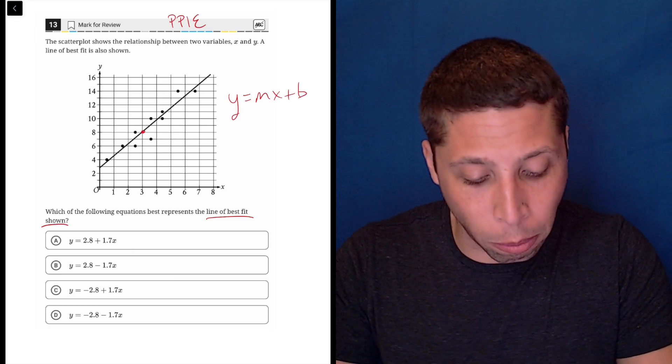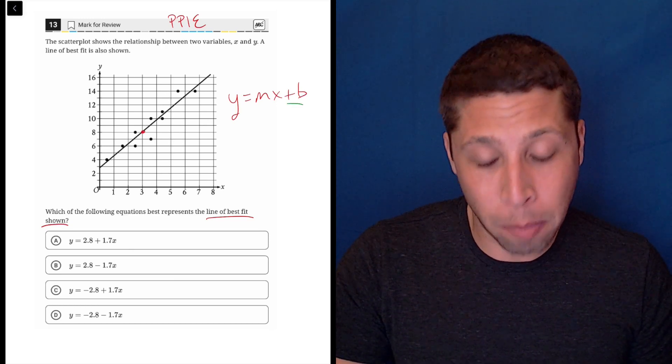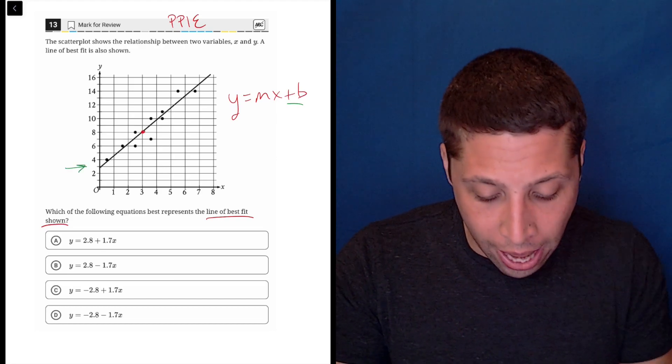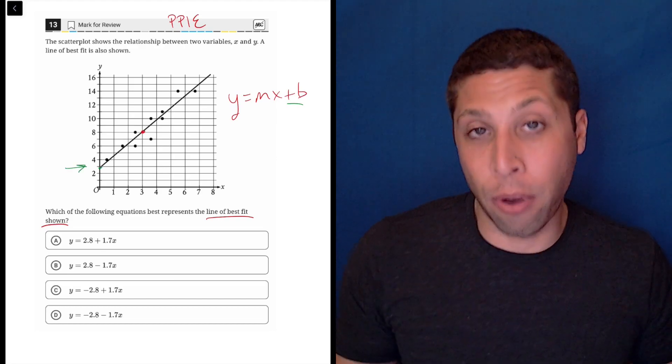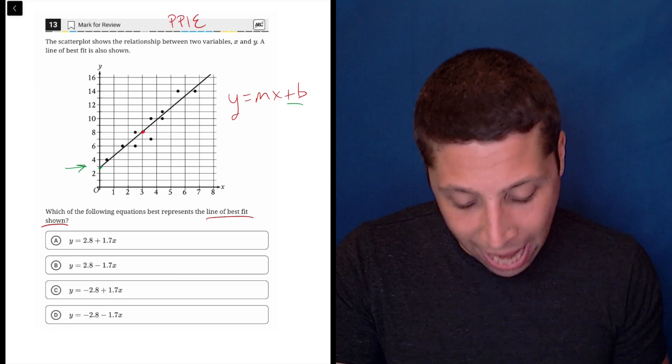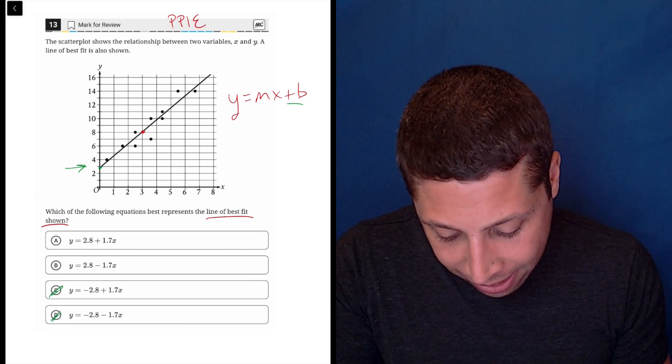I always like to start with the y-intercept because it's easiest to spot. That's the point on the y-axis that the line touches, so that would be right here, and we can see it's around 3, but it's definitely not negative 3, so we have these two negatives in C and D.